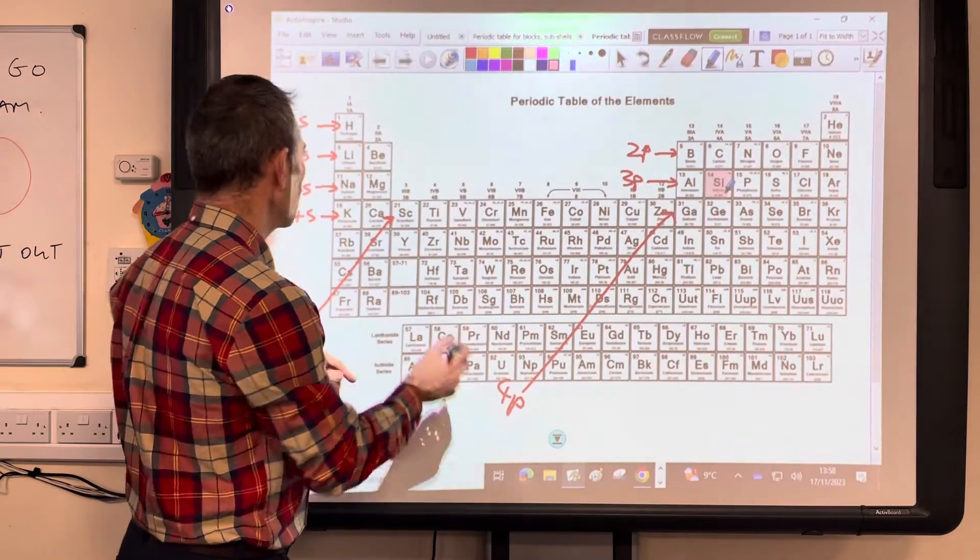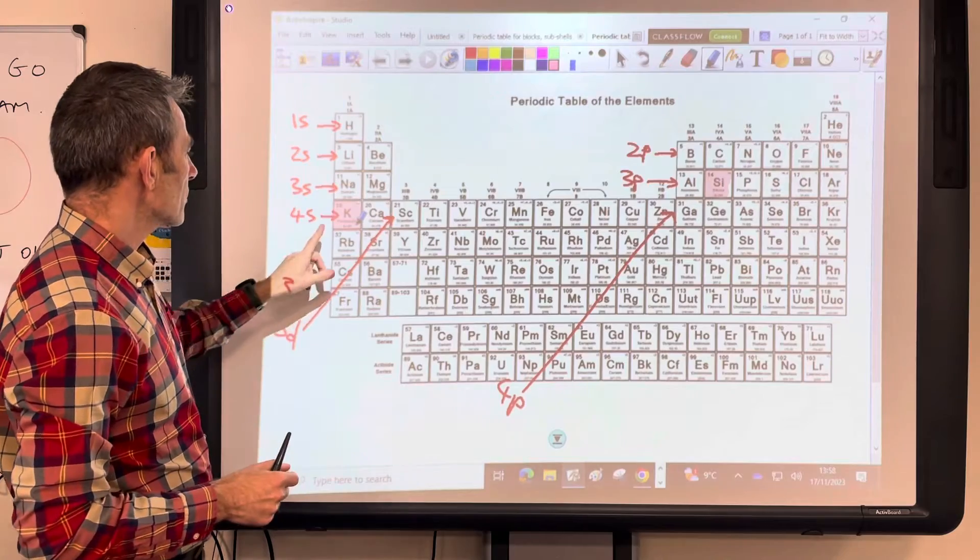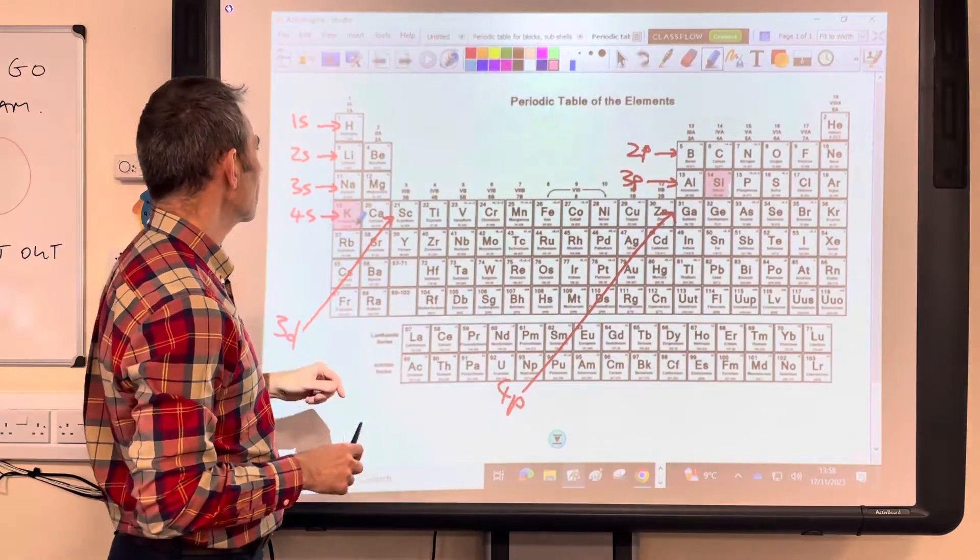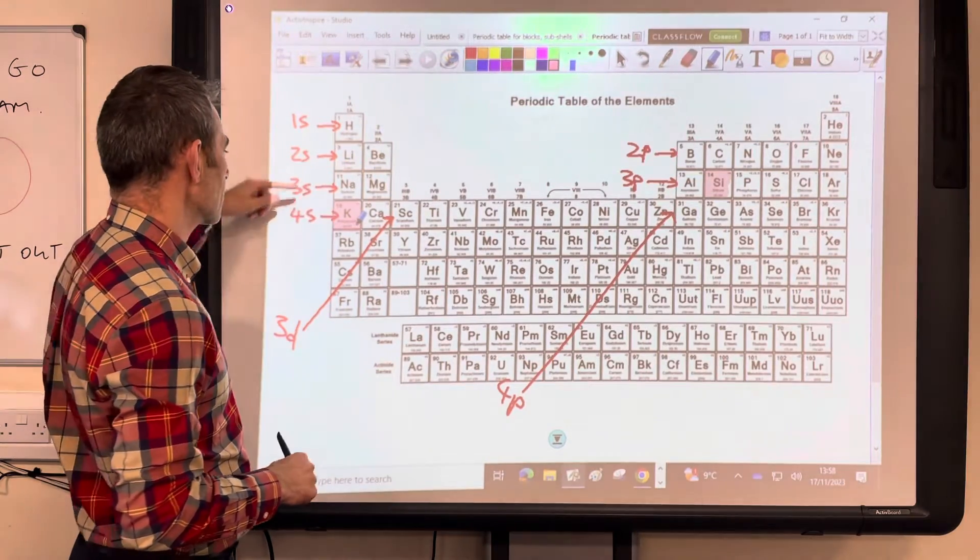Let's go for this one here. So potassium. So 4s is just starting to fill. So everything else is full. 1s2, 2s2, 2p6, 3s2, 3p6, 4s1.